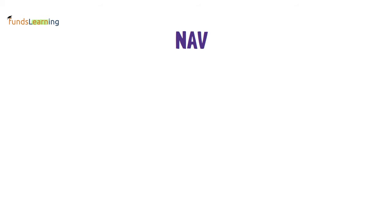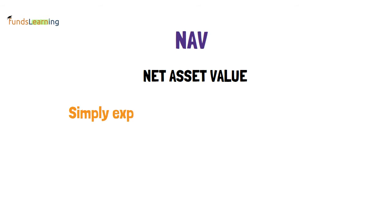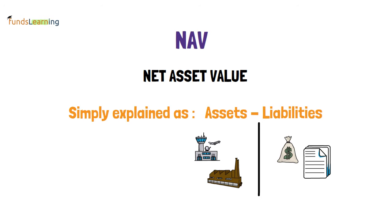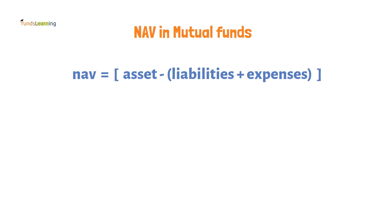NAV is nothing but the Net Asset Value. It is calculated by the entity's assets minus the value of its liabilities. The entity's assets are the organization's tangible and intangible property. The liabilities are something that the organization owes — usually money — and also includes loans, mortgages, bonds, and warranties. In mutual funds, NAV is calculated as: (Assets minus Liabilities plus Expenses) divided by the number of units outstanding.